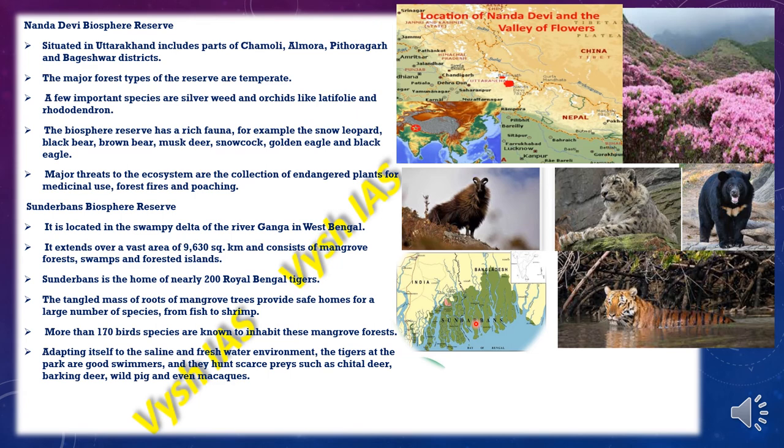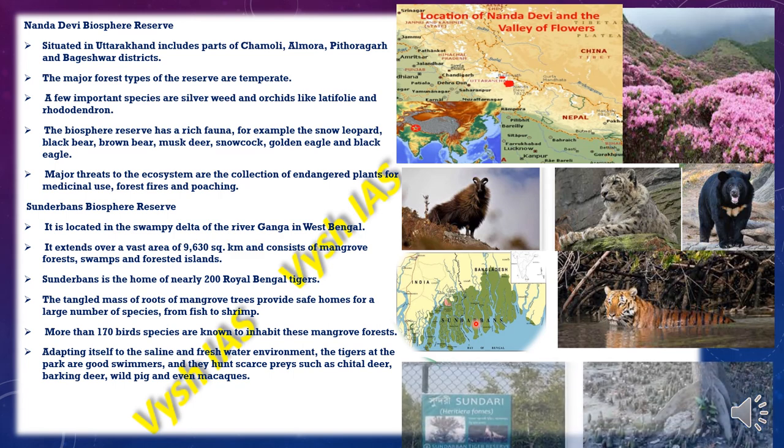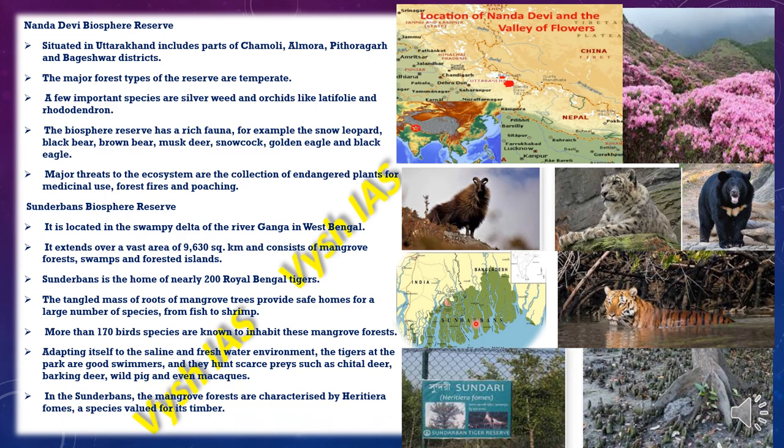The tigers in the Sundarbans have adapted to the saline and freshwater environment and have become very good swimmers. They hunt scarce prey like cheetal deer, barking deer, wild pig and macaques. The Sundarbans is famous for its mangrove forest characterized by the Heritiera fomes trees, also known as Sundari, which is valued for its timber.